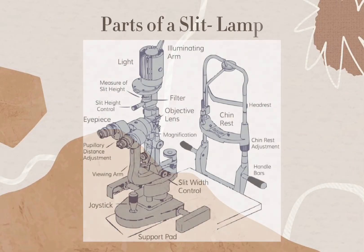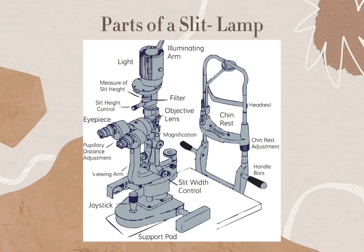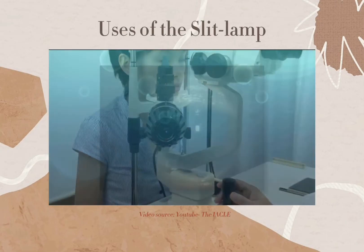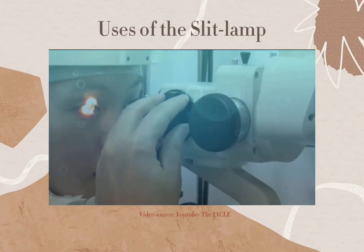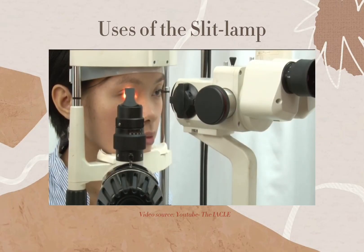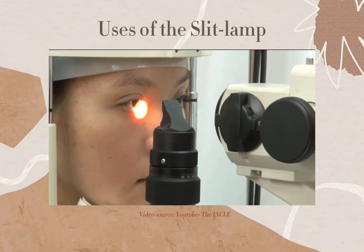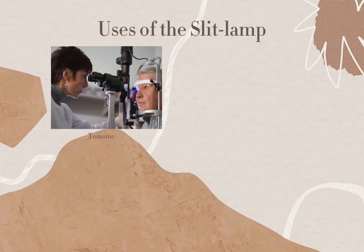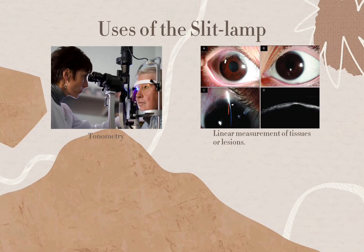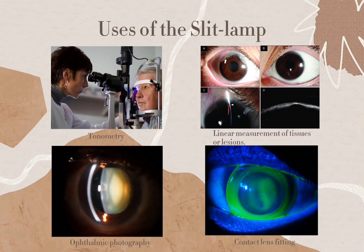The last part of the eye exam is the slit lamp biomicroscopy. The slit lamp biomicroscope consists of three principal portions: the viewing arm containing the eyepiece and objective lens, the illumination arm containing the light source and its controls, and the patient positioning frame containing the headrest, chinrest, and handlebars. The slit lamp is indispensable for detailed examination of virtually all tissues of the eye, routinely used for the anterior segment, including the anterior vitreous. It is also used for tonometry, linear measurement of tissues or lesions, ophthalmic photography, and contact lens fitting. That concludes the eight-part eye exam. Thank you for watching.